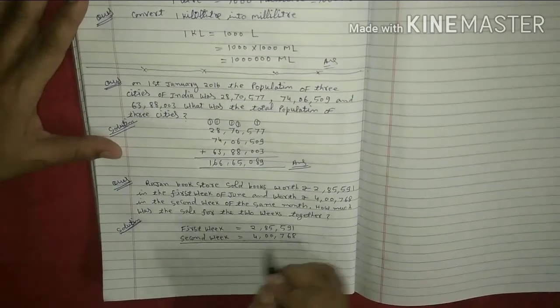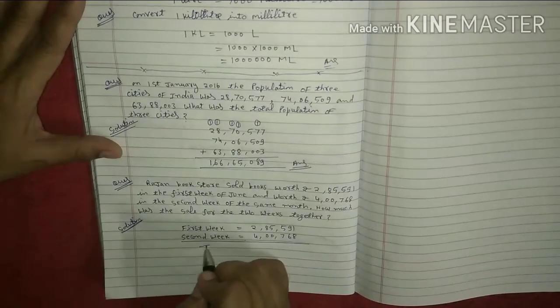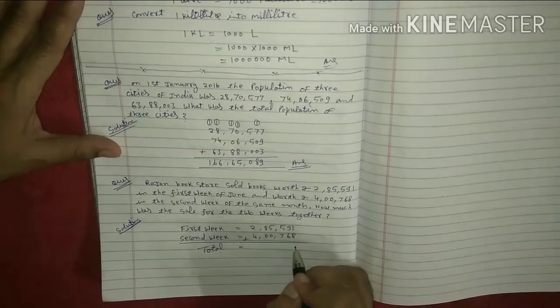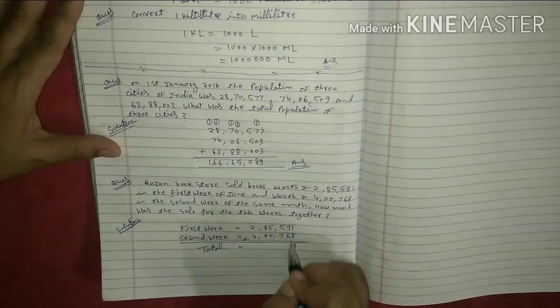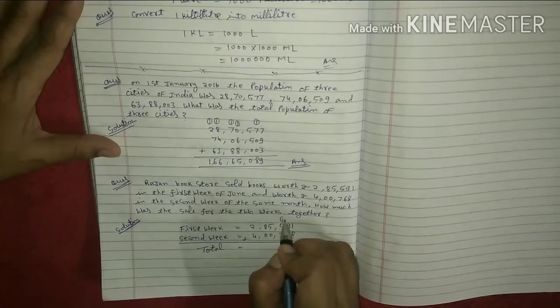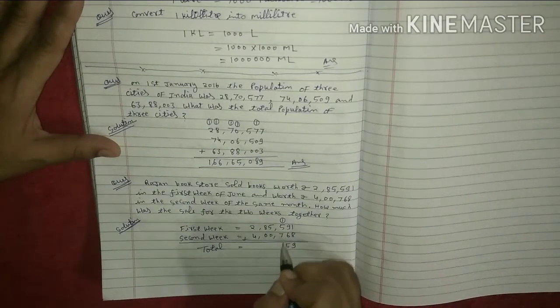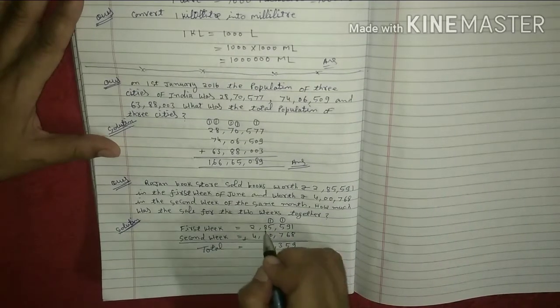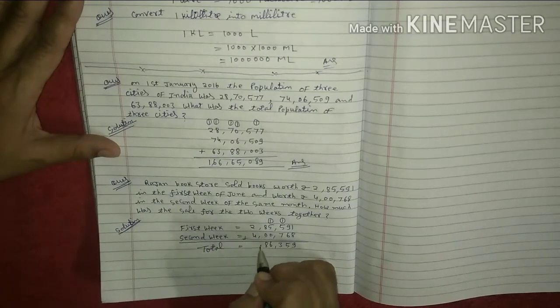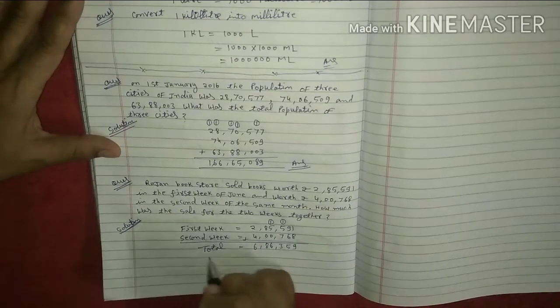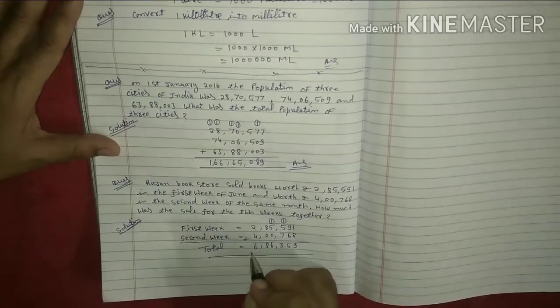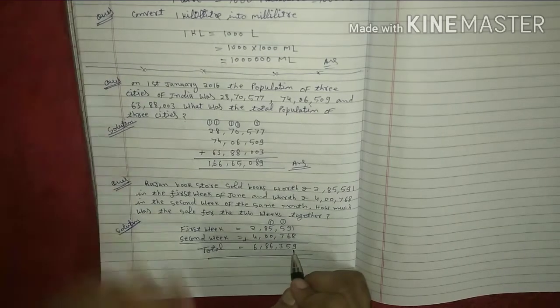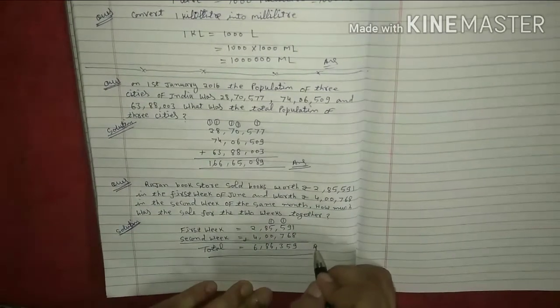And you have to find out the total sale. Right here, total. Plus. 8, 19. 6, 9, 15. Carry 1. 5, 16, 7, 13. Carry 1. 5, 16 and 8, 4, 26. So your answer is 6,86,359. Right, students.